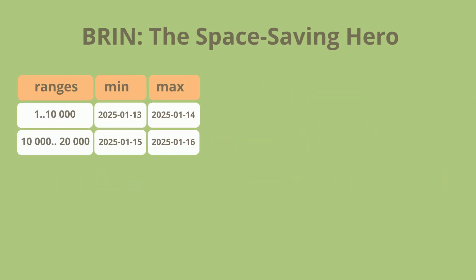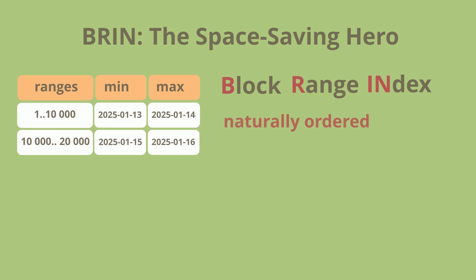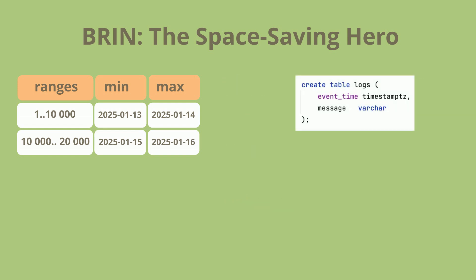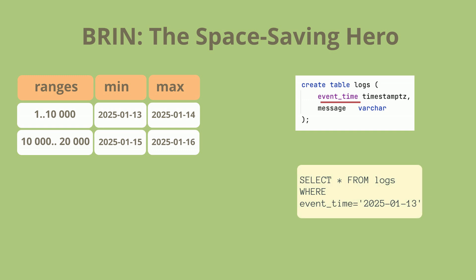Lastly, let's discuss BRIN – block range index. This index type is designed for huge tables where data is naturally ordered, such as timestamps or sequential IDs. Unlike Btree and GIN, which store individual values, BRIN stores summaries of value ranges, making it incredibly lightweight. For example, for a logs table with millions of rows, a BRIN index on the event time column can dramatically speed up range queries. Instead of scanning every row, BRIN only checks relevant blocks, making searches much faster.